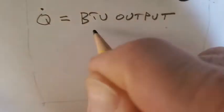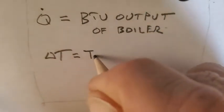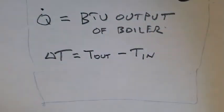So if we know the boiler output at high fire or low fire, it doesn't really matter. And we know our delta T by using an infrared, measuring the inlet and outlet, subtracting the two.